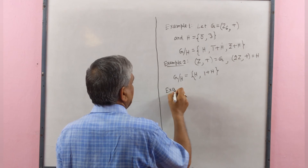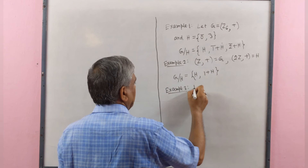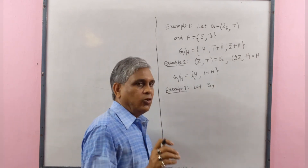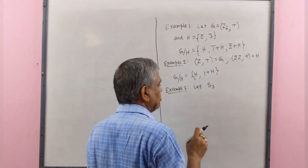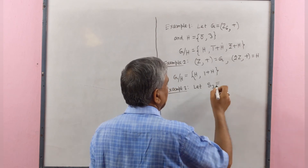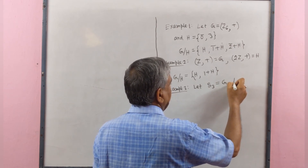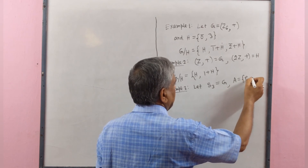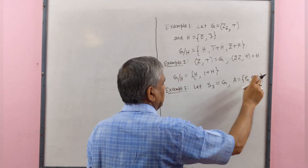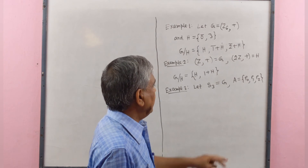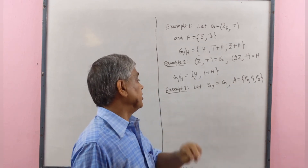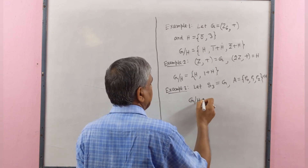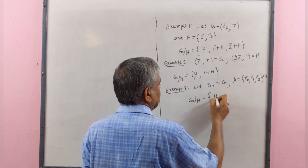Example 3: Let S₃ be the set of all permutations of degree 3. This is a symmetric group of degree 3; let this equal G. And let A be the alternating subgroup of S₃, containing elements ρ₀, ρ₁, ρ₂, which are all even permutations. Since A₃ is a normal subgroup of S₃, let the name of this be H. The quotient group G by H contains elements H and ρ₃H.